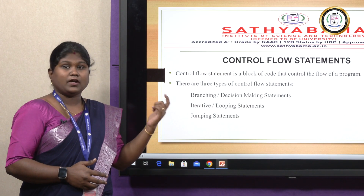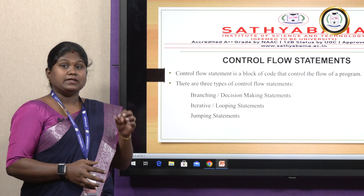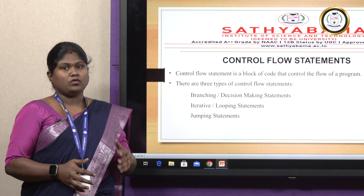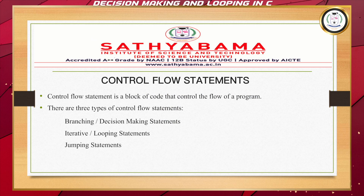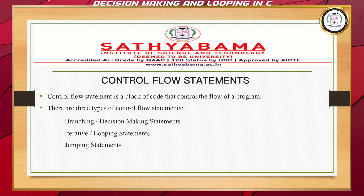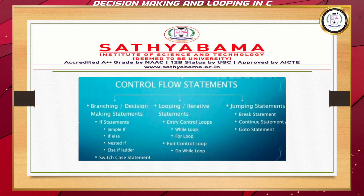This particular control flow statement will decide the flow of the control. The control flow statements have three types: one is branching or decision-making statements, the next one is iterative or looping statements, and the other one is jumping statements. First, we'll move to branch or decision-making statements.